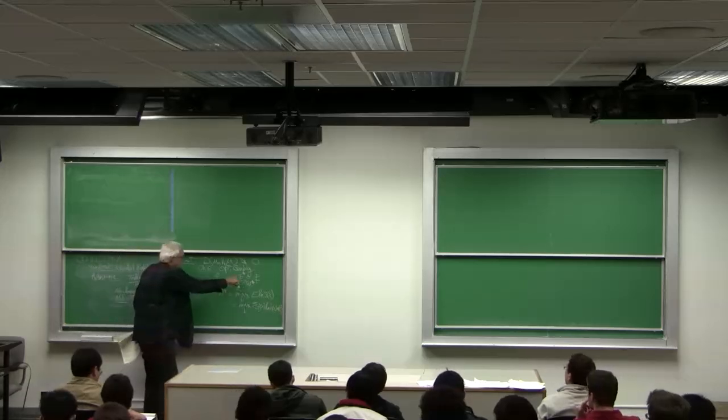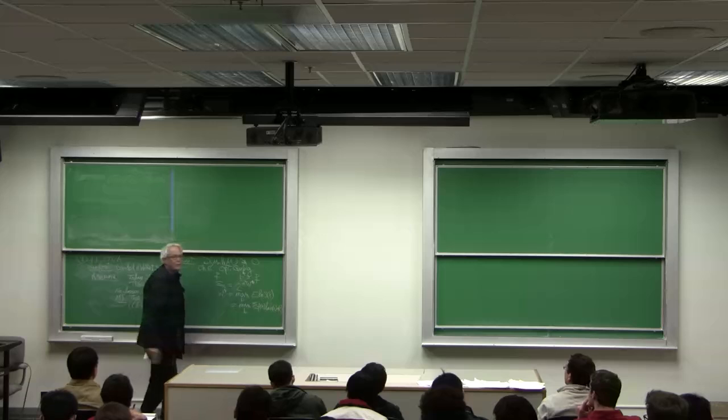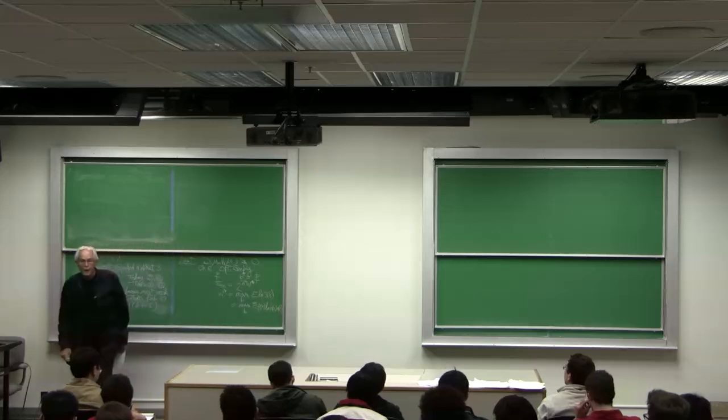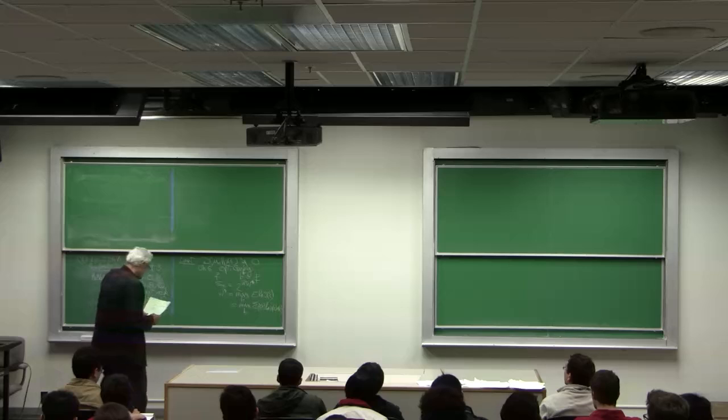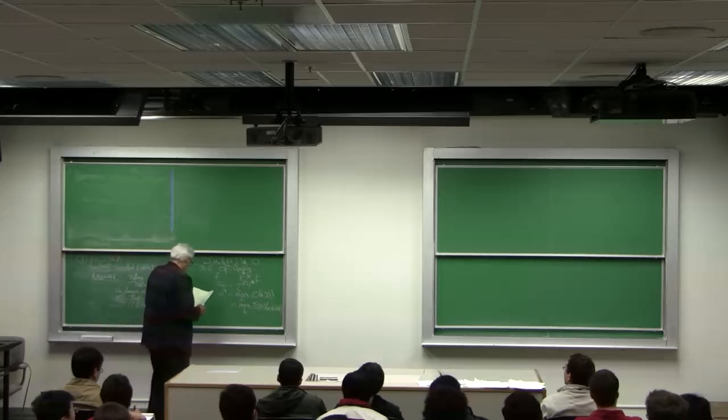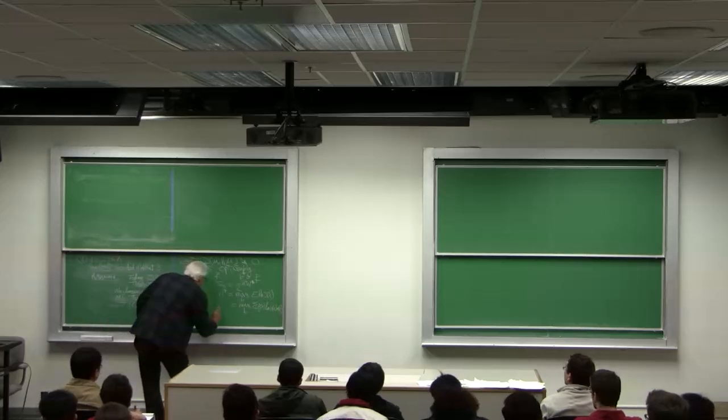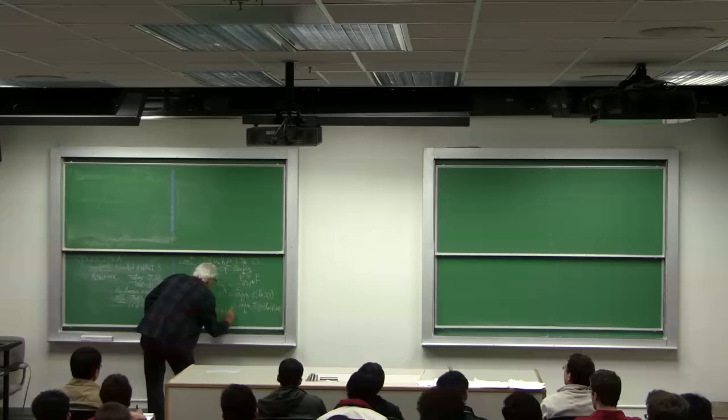Which is explicitly the max over B of summation P of X log the amount bet on horse X times the odds returned on horse X, O of X. And as I mentioned, when you maximize this, you get B equals P.